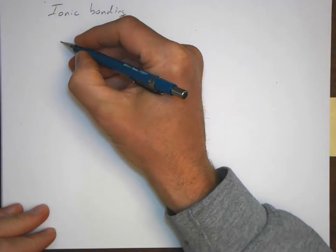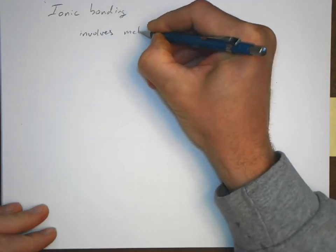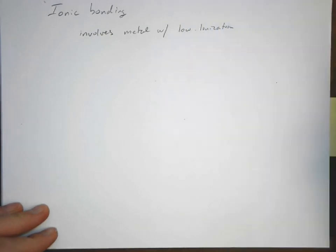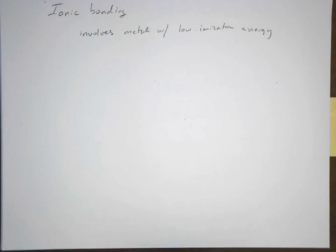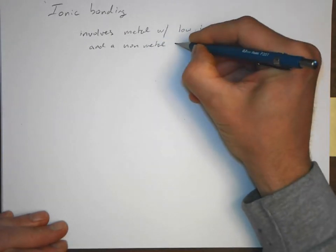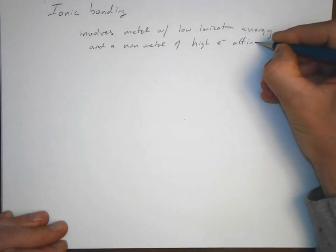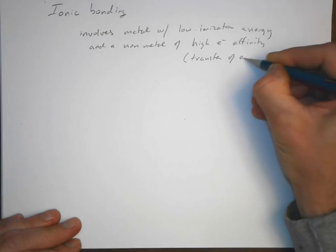Let's look at ionic bonding — a quick introduction and then we'll look at some of the things involved with ionic bonding. Ionic bonding involves a metal with a low ionization energy and a non-metal with a high electron affinity, and what we're looking for here is the transfer of electrons.